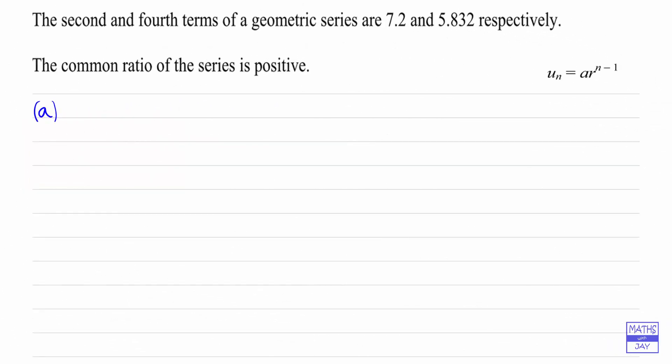One way of thinking about this question is to use the formula that we've got. This is giving us the nth term and we know we've got the second term and the fourth term. So the second term, we'd have n equal to 2, so we've got a times r to the 2 minus 1. In other words, the second term is ar and we're told that that's 7.2.